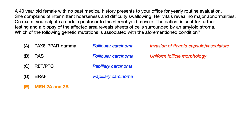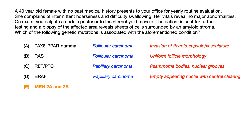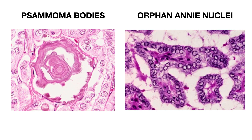Likewise for papillary — if the question wanted you to think papillary, they would have given you psammoma bodies, nuclear grooves, or described 'empty appearing nuclei with central clearing,' referring to orphan Annie nuclei in papillary carcinoma tissue. The vignette instead says 'sheets of cells surrounded by an amyloid stroma,' which is the description for medullary. They can also show you a picture — if you see psammoma bodies or orphan Annie nuclei in an image, they want you to pick papillary carcinoma, even without using those terms explicitly.